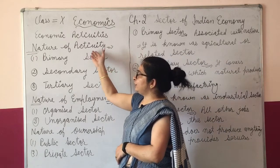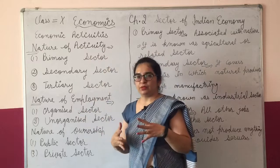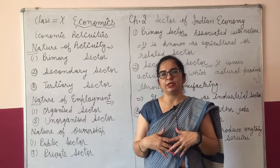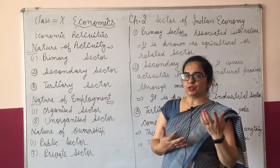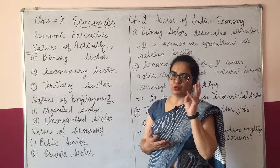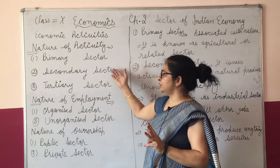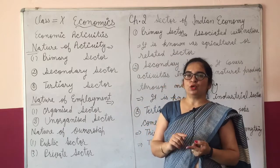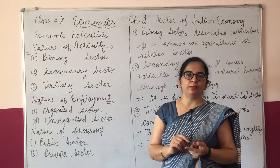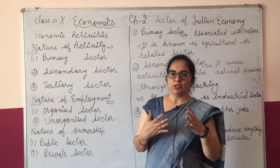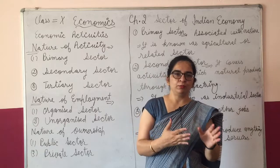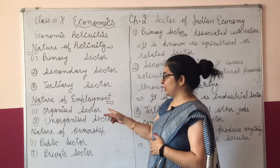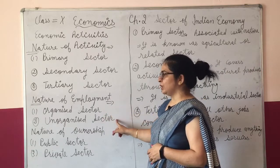If we talk about the nature of activities — the nature of our economic activities — we can divide them into 3 parts: first primary sector, second secondary sector, and third tertiary sector. The second basis is the nature of employment: on the basis of employment, activities are of 2 types — organized sector and unorganized sector.